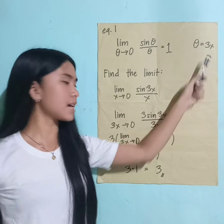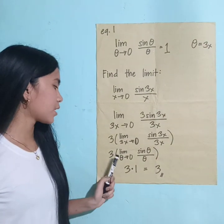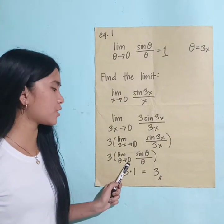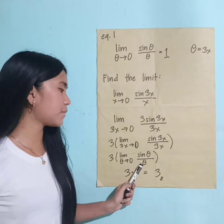If we let theta equal 3x, we'll have this: 3 times the limit of theta as it approaches 0, sine of theta divided by theta.